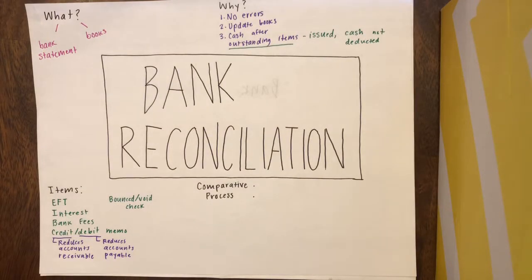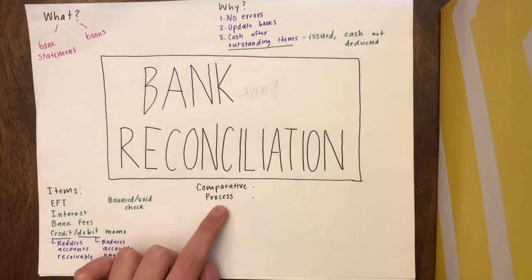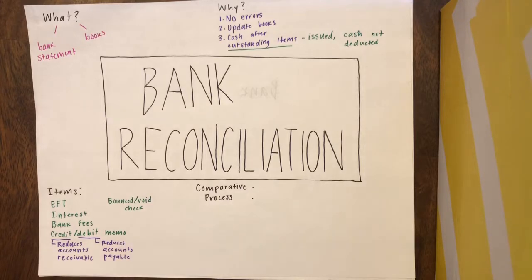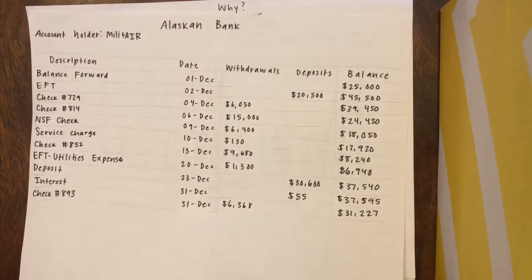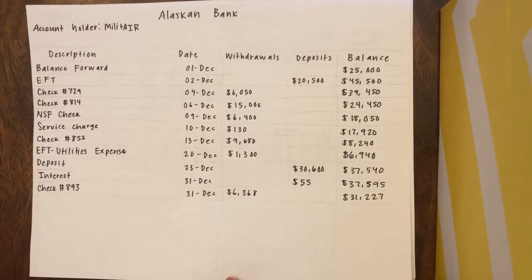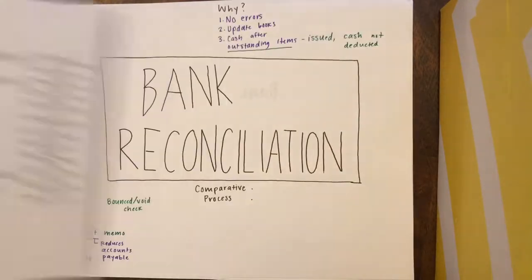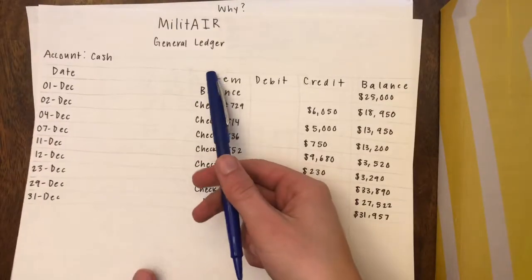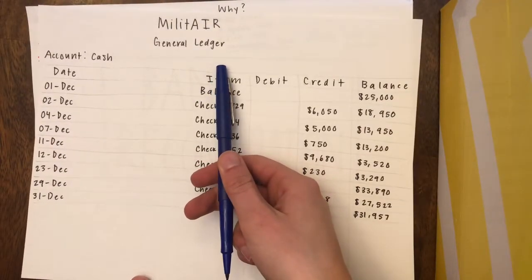The last thing I will be covering in this video is how the comparative process works for bank reconciliation — the steps of how to complete a bank reconciliation. First, you should identify the bank statement and the books. For example, this Alaskan Bank is a bank statement issued by the bank, and the general ledger for Militaire is an example of a company's books.